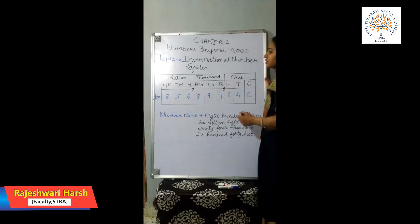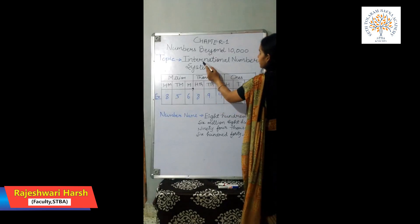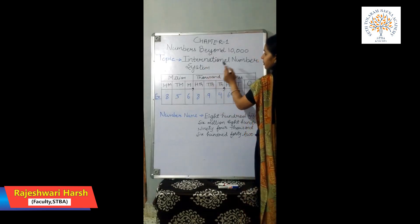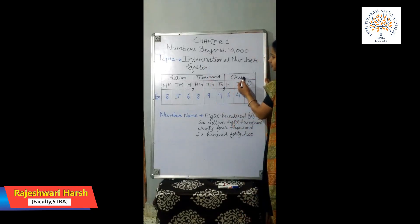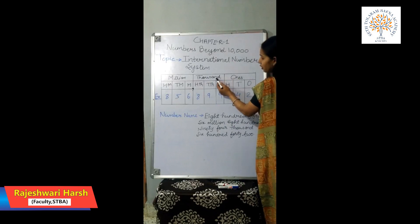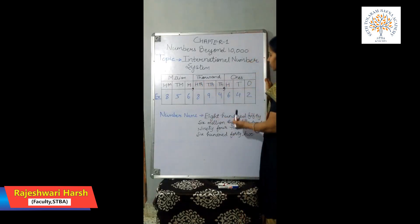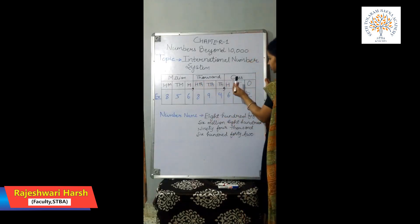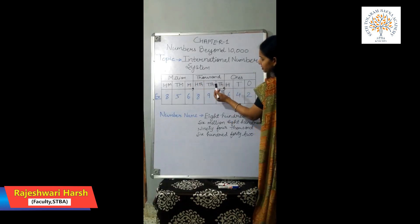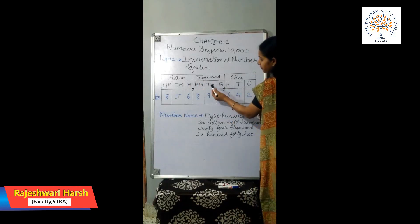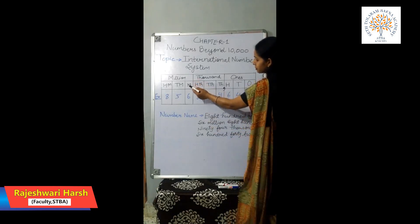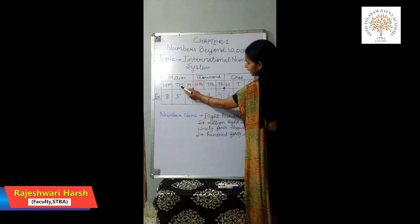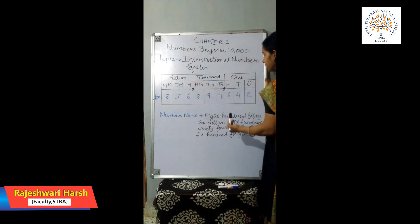Now we will start the next topic: the International Number System. This system consists of ones group, thousands group, and millions group. Ones group consists of ones, tens, and hundreds. Thousands group consists of thousands and hundred thousands. Millions group consists of millions, ten millions, and hundred millions.